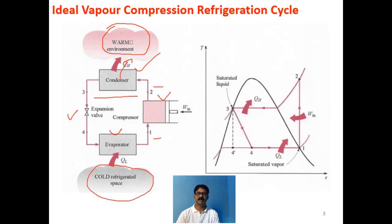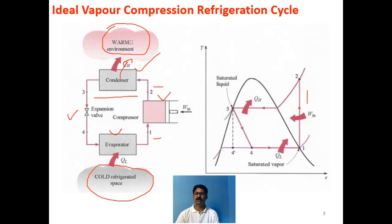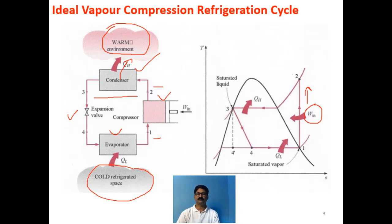Now the T-S diagram — the temperature-entropy diagram. Process 1 to 2: the compression process is isentropic compression, which in a T-S diagram appears as a vertical line perpendicular to the entropy axis. You can see 1 to 2 is a vertical line. The compressor requires work input — power is given to the compressor.